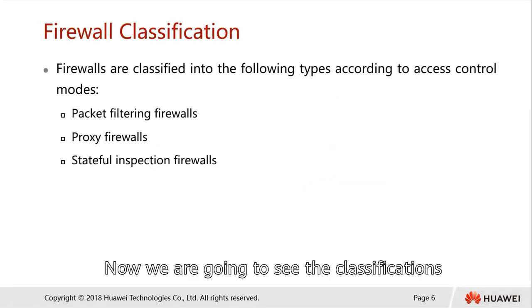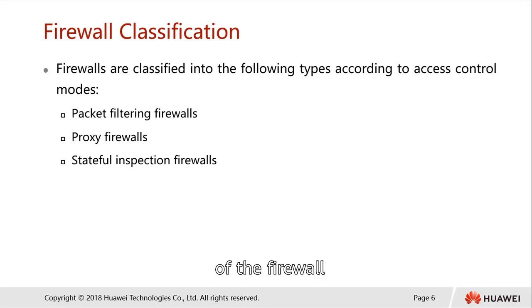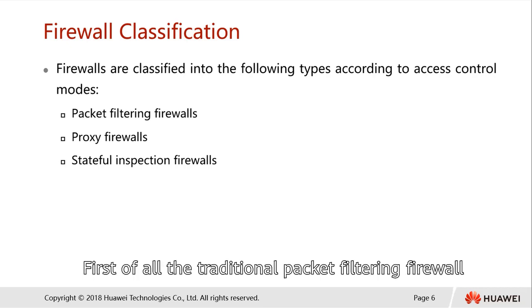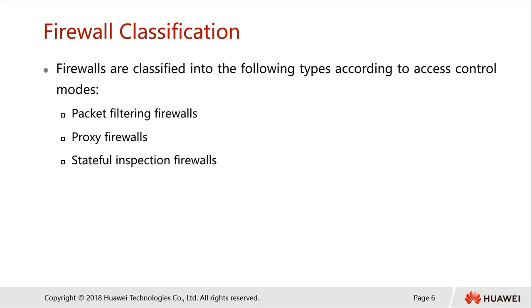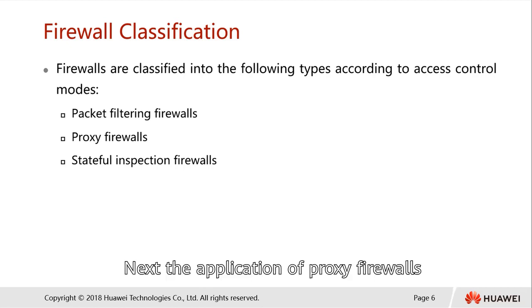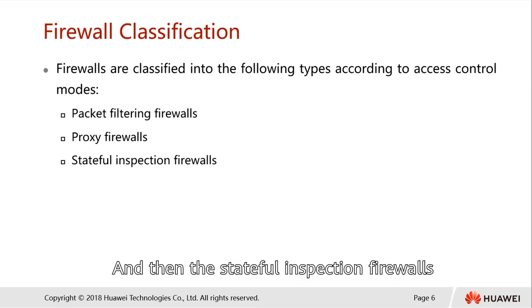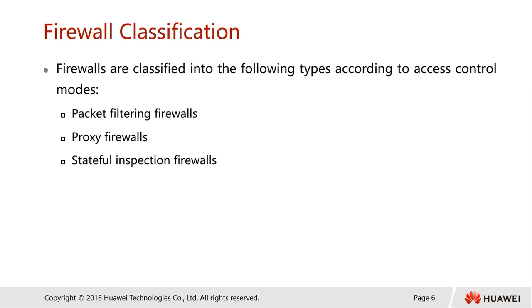Now we are going to see the classifications of firewalls. Firewalls are classified into the following three types: first, the traditional packet filtering firewall; next, the application or proxy firewall; as well as the stateful inspection firewall.